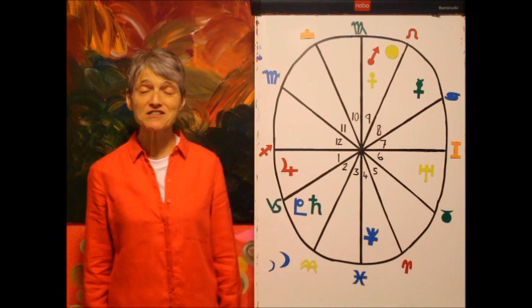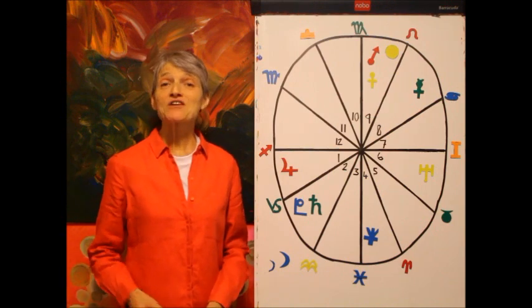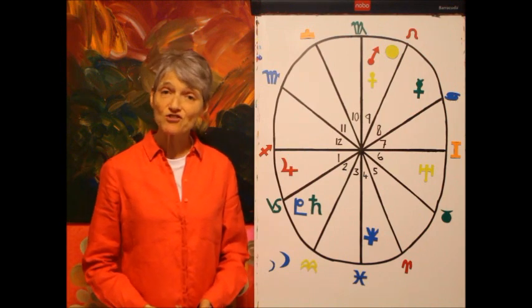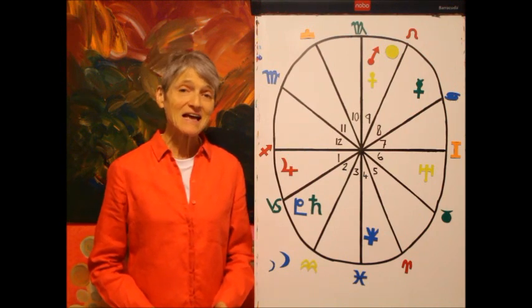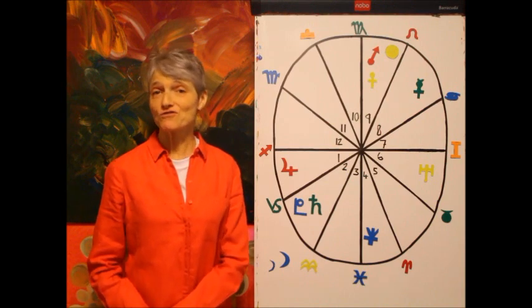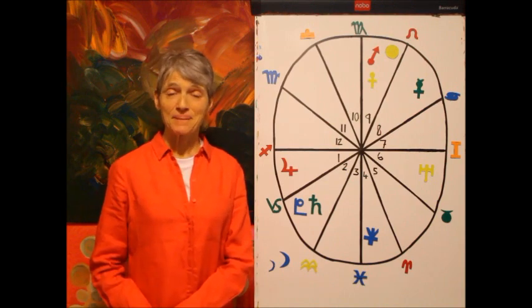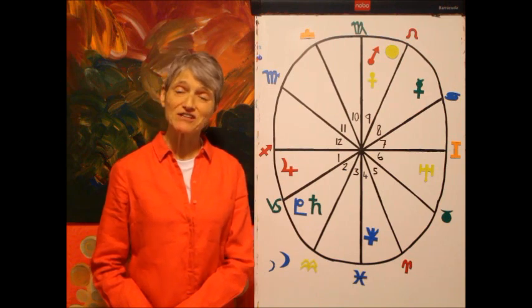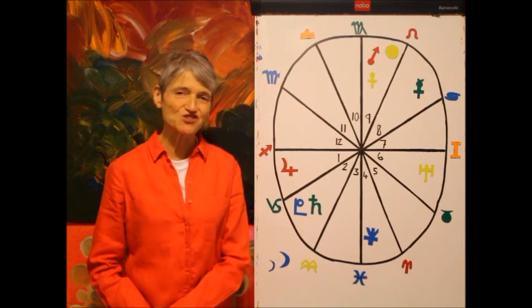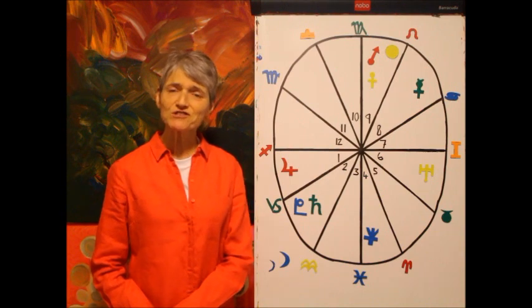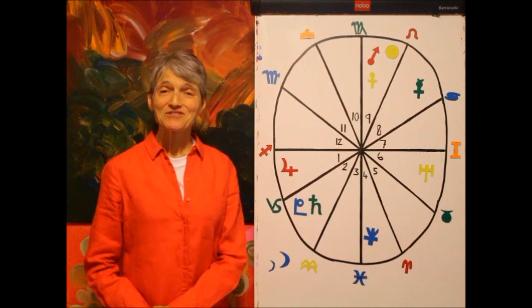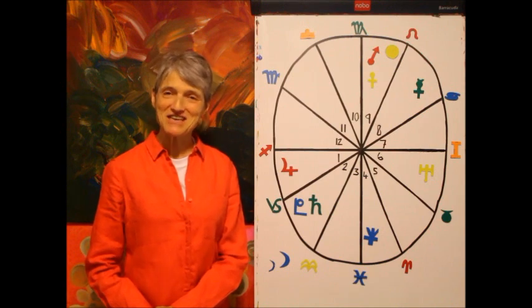On the first of the month, Mercury goes direct, making this a good time now to get into contracts, agreements, anything legal. You can sign things now and it should go through more easily. Communications generally should be easier. Anything to do with travel plans and transportation should also be smoother, and anything technological should also be easier to get around.